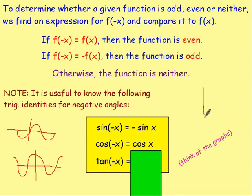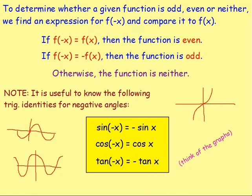And for tan, if you graphed it, it has half-turn symmetry. So tan of negative x — if you had negative 10, that would be the negative of tan of 10. If you had tan of negative 20, that would be the negative of tan of 20. It is useful to remember that because they come into these questions.